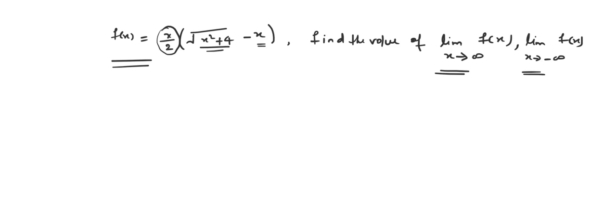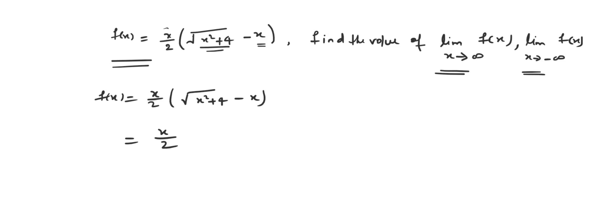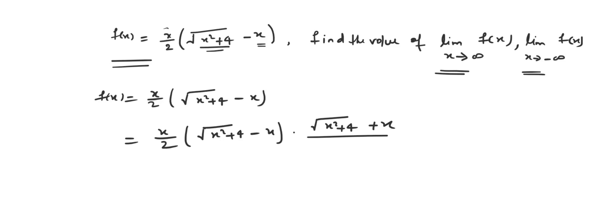So to find the limit of this function, first we need to do rationalization. So we have the function f equal to x over 2 times the bracket root over x squared plus 4 minus x. What we will do in rationalization is multiply and divide by root x squared plus 4 plus x.